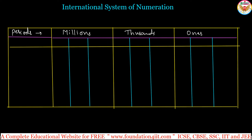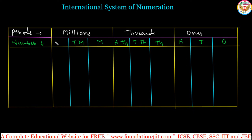For example, if you take any number — let me write this also. In the ones period we have ones, tens, and hundreds. Next is thousands, ten thousands, and hundred thousands. Then comes millions, ten millions, and hundred millions. This is the set of place values in the international system.